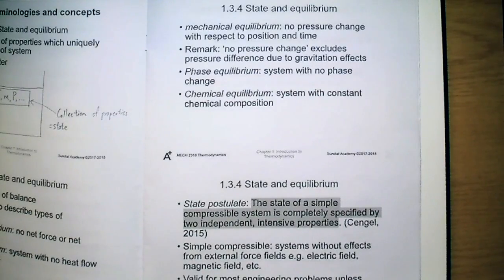Phase equilibrium describes a system in which there is no phase change occurring. And chemical equilibrium is a description of a system in which the chemical composition remains constant. That means there are no net chemical reactions occur.